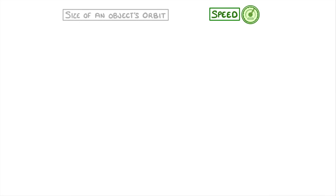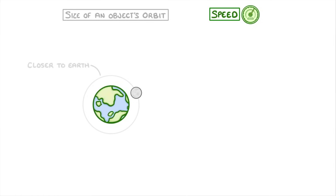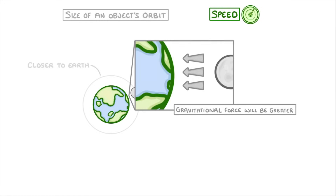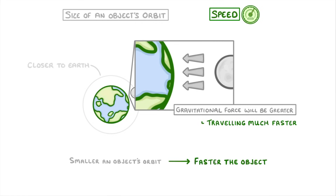The last thing we need to look at is the relationship between the size of an object's orbit and its speed. Let's imagine that we pulled the Moon's orbit inwards, so that it's closer to the Earth. Because the distance between the Earth and the Moon is now much smaller, the size of the gravitational force will be much greater. And so if nothing else changed, the Moon would probably get sucked in towards the Earth. To avoid this, the Moon would have to start travelling much faster, so that its instantaneous velocity increased, which would allow it to maintain a stable orbit. So the takeaway is that the smaller an object's orbit is, the faster that object must be travelling in order to maintain a stable orbit, because otherwise it will be sucked into the object that it is orbiting.